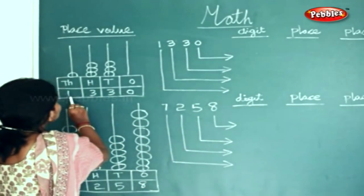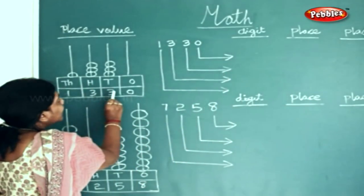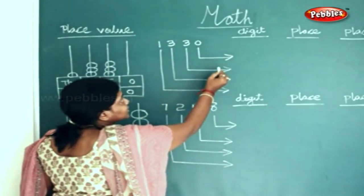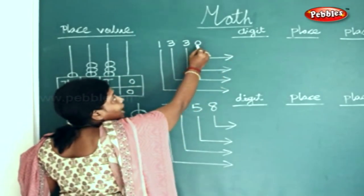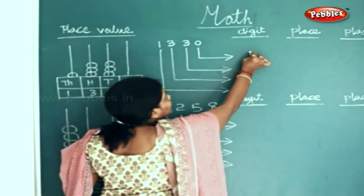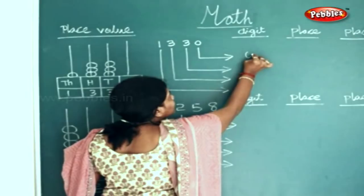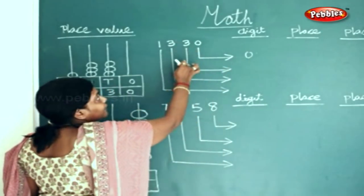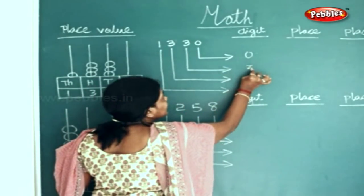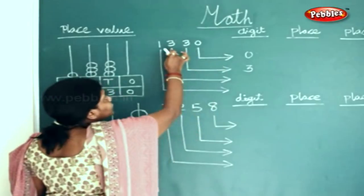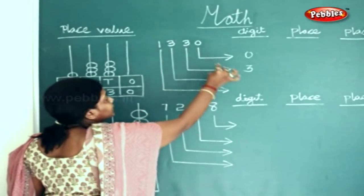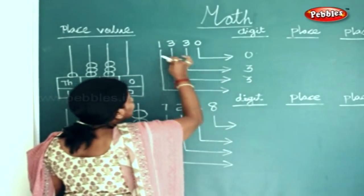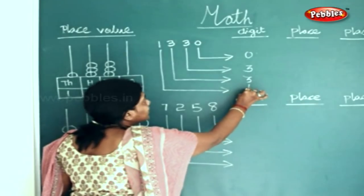Here the number 1330 is given. First we will write the digit. What digit do you have here? You have a zero here. What digit do you have here? You have a three here. What digit do you have here? Again a three, and here a one.